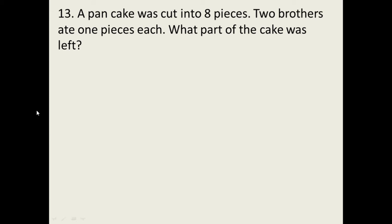Question number 13. A pancake was cut into 8 pieces. Two brothers ate one piece each. What part of the cake was left? Okay, we have here a one whole pancake and then we are going to cut it into 8 equal parts. If we are going to cut a one whole pancake into 8 equal parts, so each piece is equivalent to 1 over 8, right? Because 1 over 8, if we are going to multiply that by 8, so that will become 8 over 8 which will equal to 1.